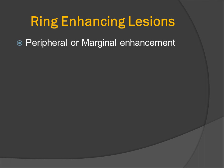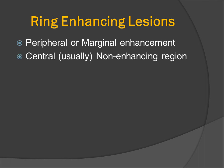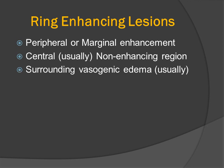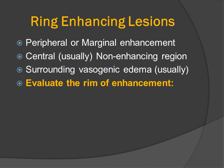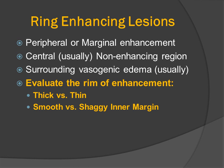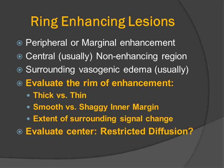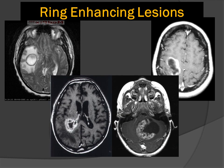A ring-enhancing lesion has peripheral or marginal enhancement that surrounds a usually central non-enhancing region. There is oftentimes surrounding vasogenic edema. We can evaluate the rim of enhancement to see if it is thick or thin, smooth versus a shaggy inner margin. We can look at the extent of surrounding signal change, often called vasogenic edema, and we can evaluate the center for possible restricted diffusion.